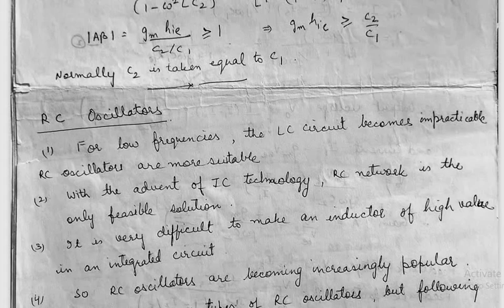The second reason is that IC technology has been introduced in our electronics, and RC networks are very easy to design on an IC. Also, you can ask why you cannot make an LC oscillator on IC — because inductance of high value is very difficult to integrate. So these are the three reasons why RC Oscillators are being preferred over LC Oscillators.